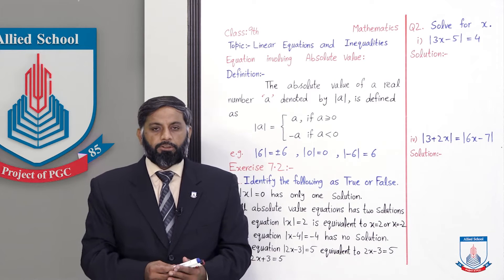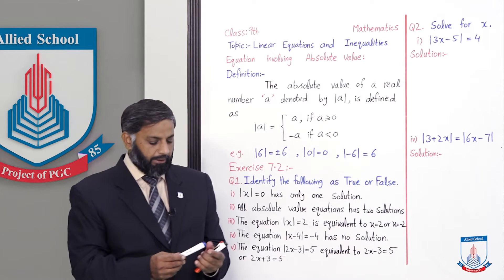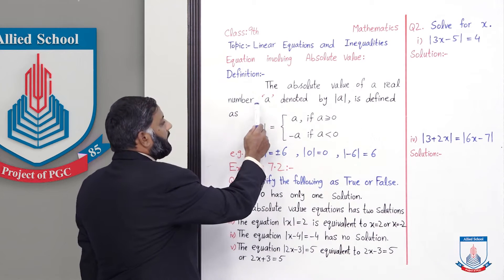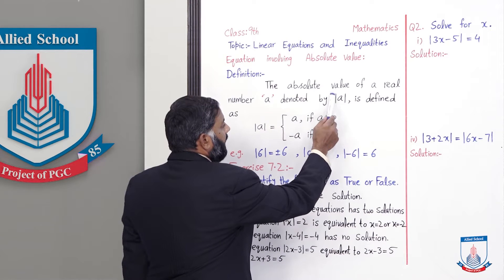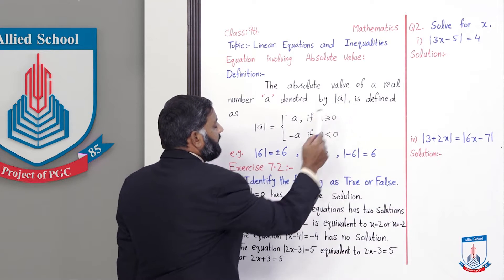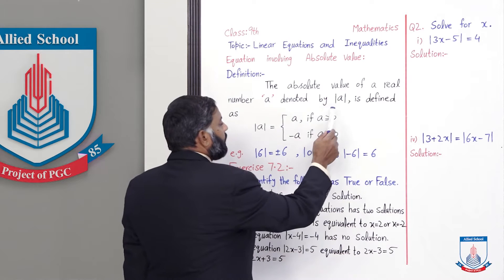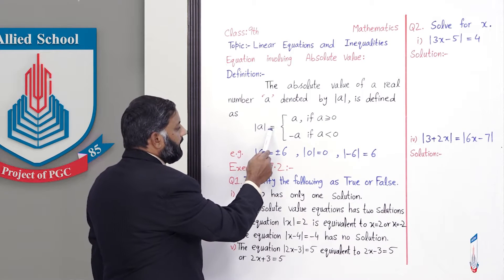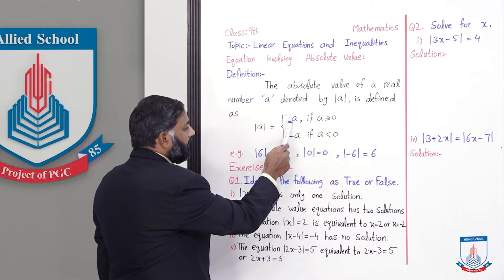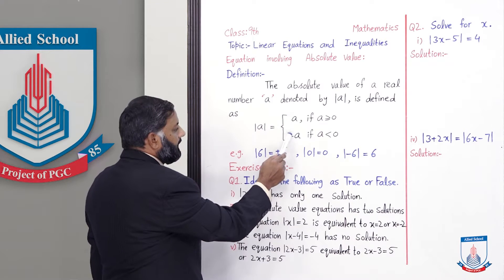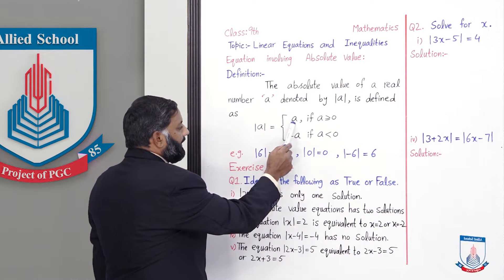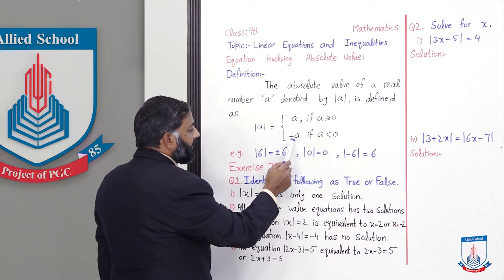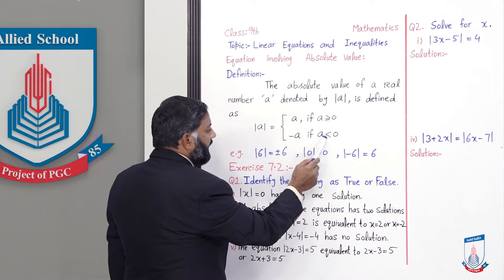Students, let's read the definition of absolute value. The absolute value of a real number 'a', denoted by |a| (two lines are placed), is defined as: absolute value of 'a' equals plus 'a' when 'a' is greater than or equal to zero, and equals minus 'a' when 'a' is less than zero.